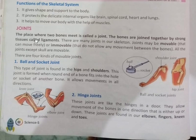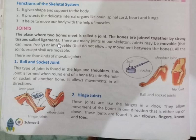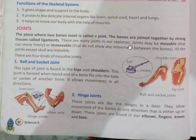Next, joints. The place where two bones meet is called a joint. The bones are joined together by strong tissues called ligaments. There are many joints in our skeleton.